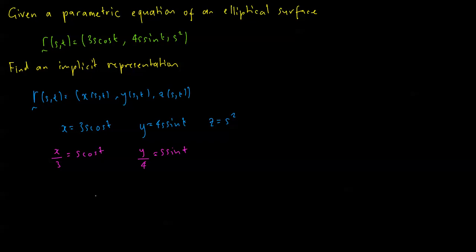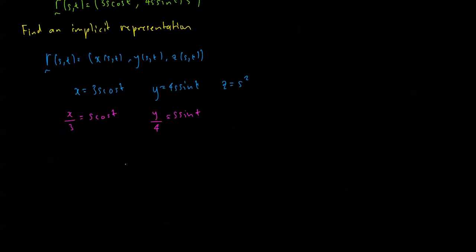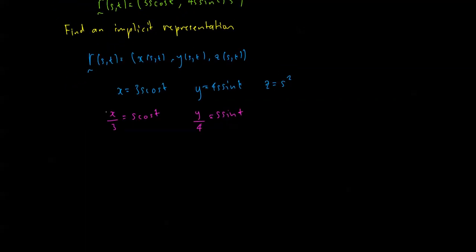I know that if I square cosine and sine and add them, they equal 1, so I'm going to use that. (x/3)² = s² cos² t and (y/4)² = s² sin² t.